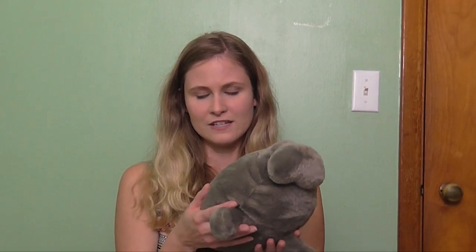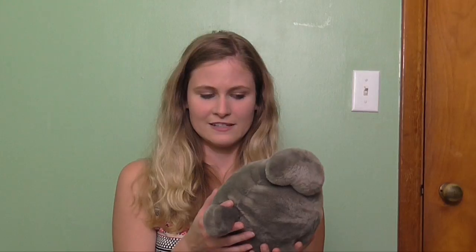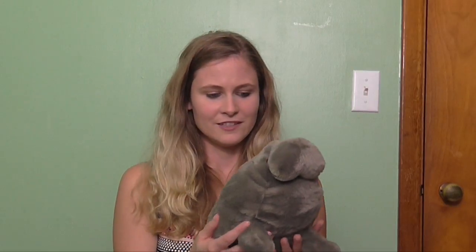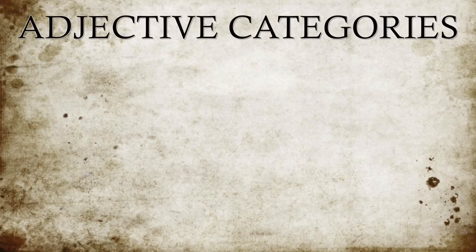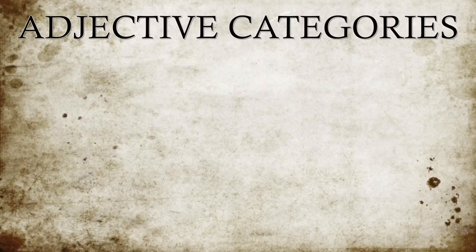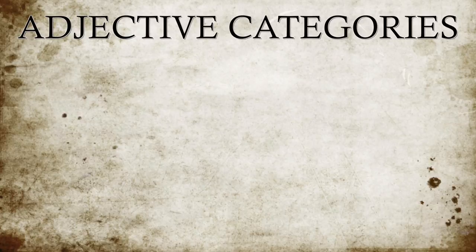So if I said 'the fluffy toy manatee,' you might actually realize I'm talking about Schnoz rather than an actual manatee, which would be pretty cool, but we have Schnoz. We need to talk about the different subcategories of adjectives — there are six of them — and I'm going to go through those, define them, and give some examples.